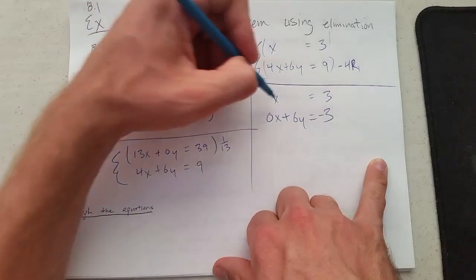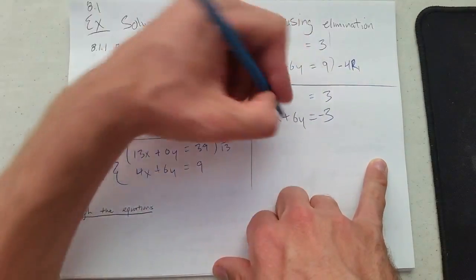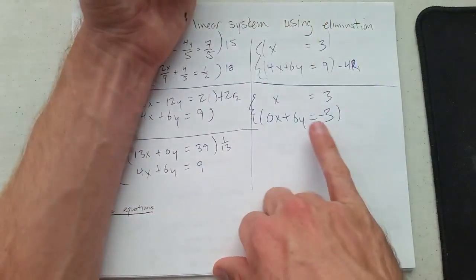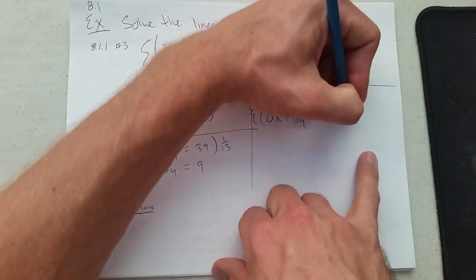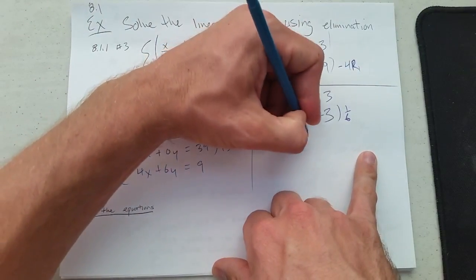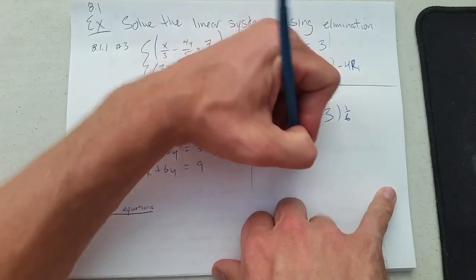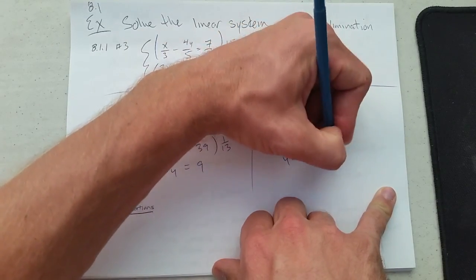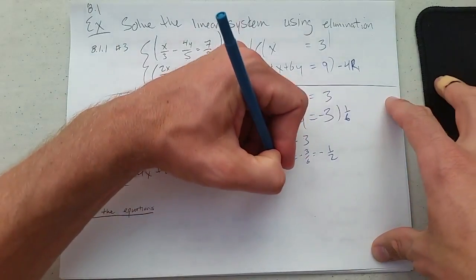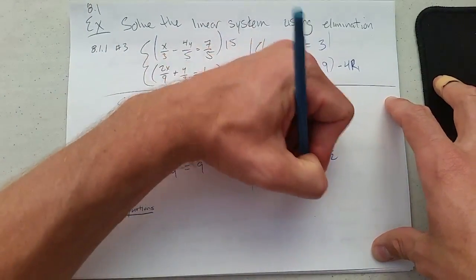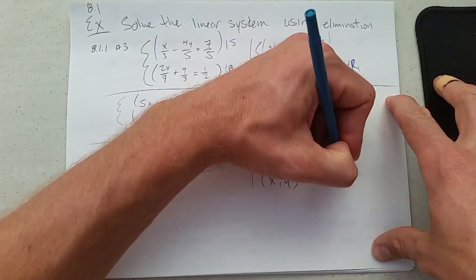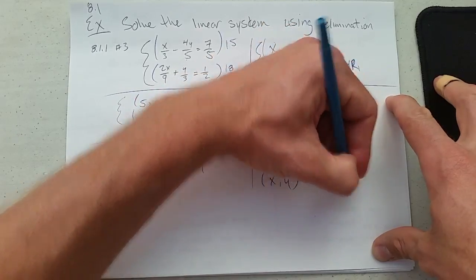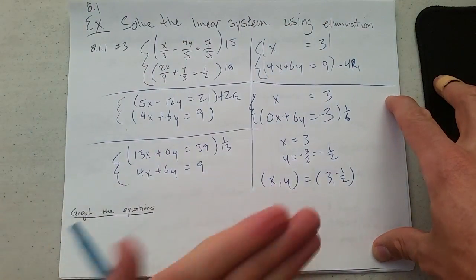So x is 3. How do I get this last one? Just multiply by 1/6. x equals 3, and y equals negative 3 over 6, which is negative 1/2. So our solution is the point (3, -1/2).